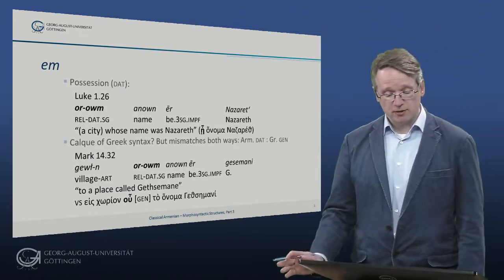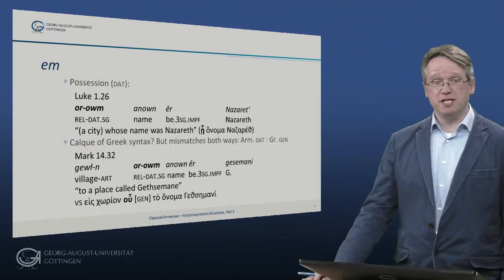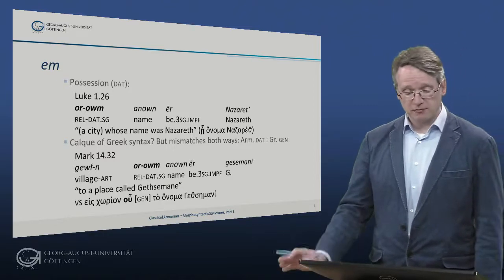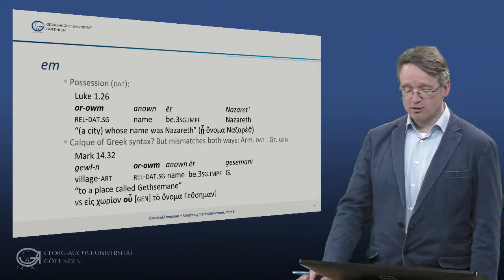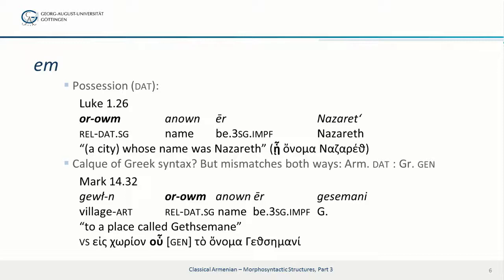It can also occur that the possessor is marked for dative in Armenian. We find this in the Bible translation: 'vorum anun er Nazareth' — a city whose name was Nazareth, with 'vorum' as the dative of the relative pronoun. This is similar to what we have in Greek, so the question arises whether this is a calque of Greek syntax. But things are not straightforward, because there are mismatches both ways — for example, an Armenian dative corresponding to a Greek genitive.